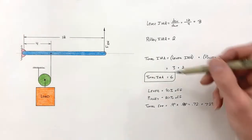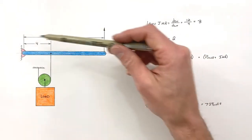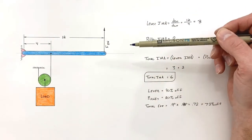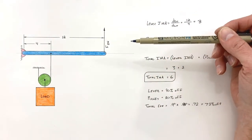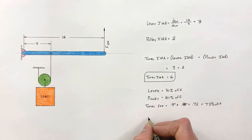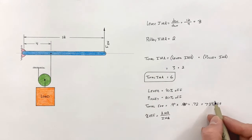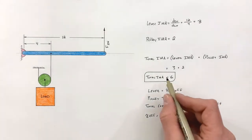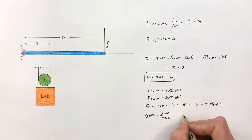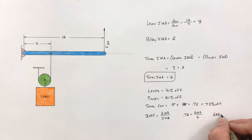If we want to find the total AMA, or the actual mechanical advantage of our compound machine, we go back to our relationship between percent efficiency and IMA. Plugging in our percent efficiency as well as our IMA, we find the actual mechanical advantage is 4.3.